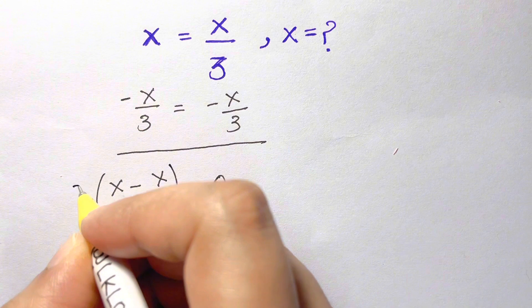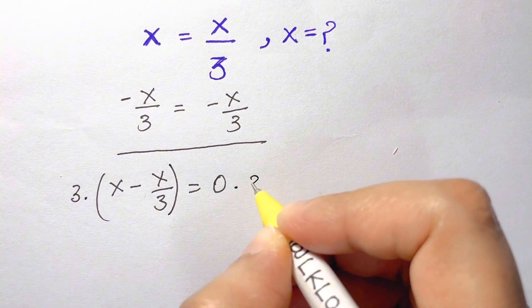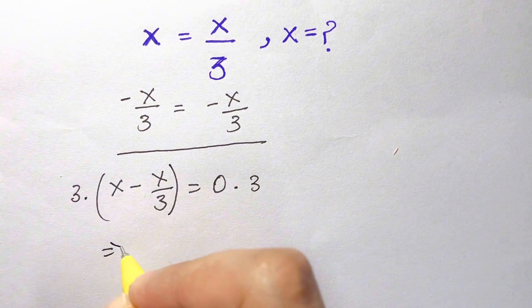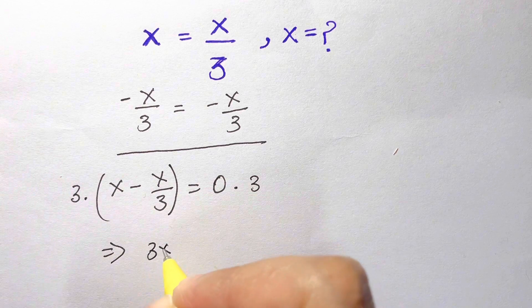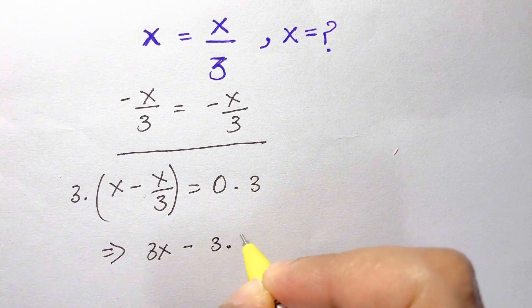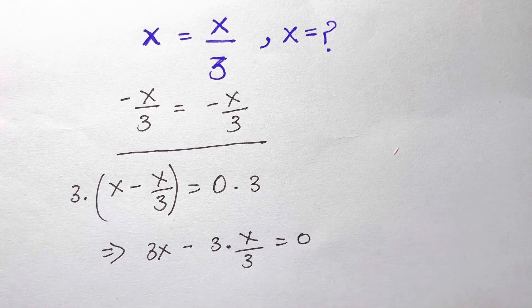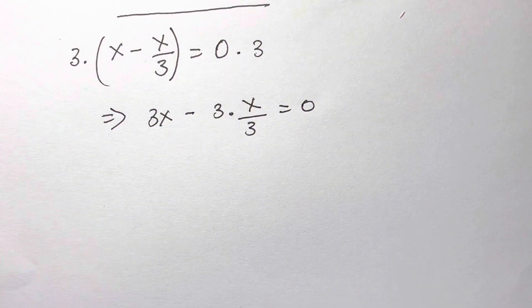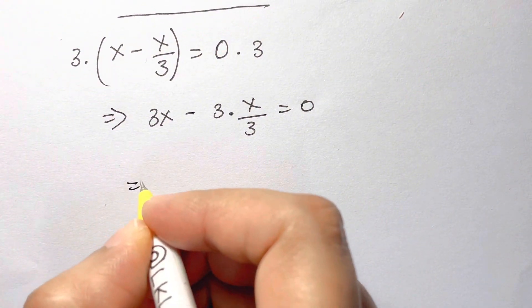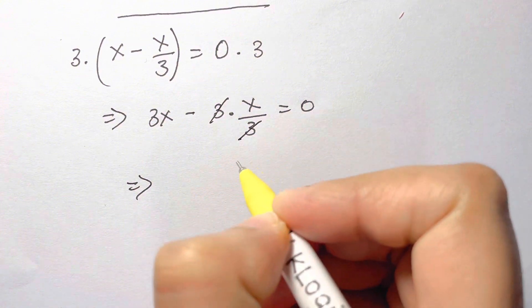Now you can multiply both sides by 3. So let's write down: you have 3 times x minus 3 into x over 3 is equal to 0. Then what can we do? In this you have this 3 and 3 gets cancelled.